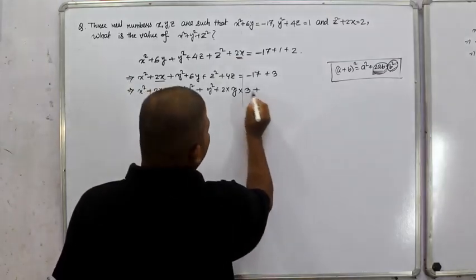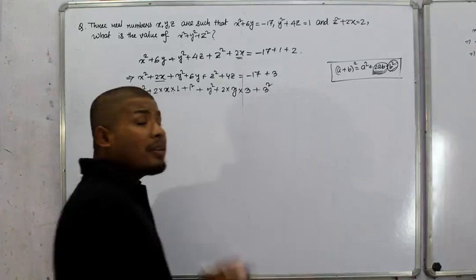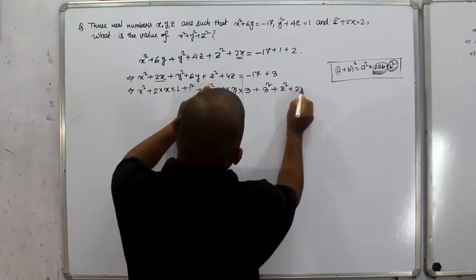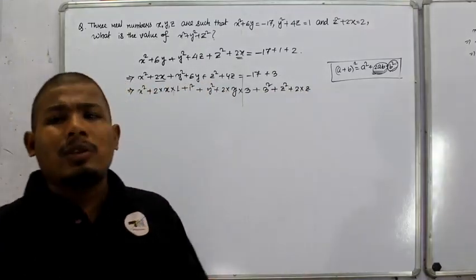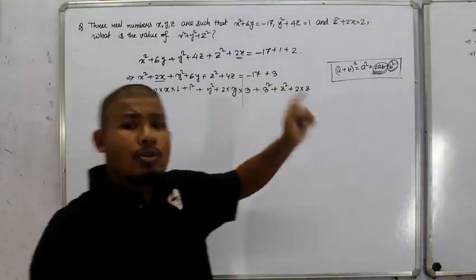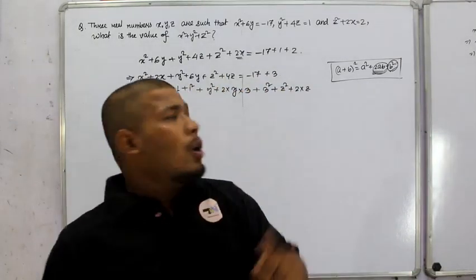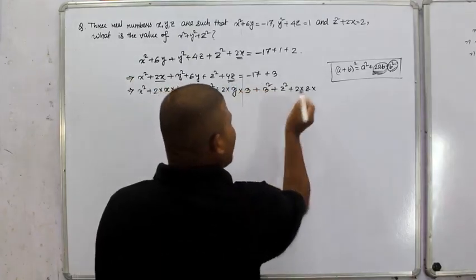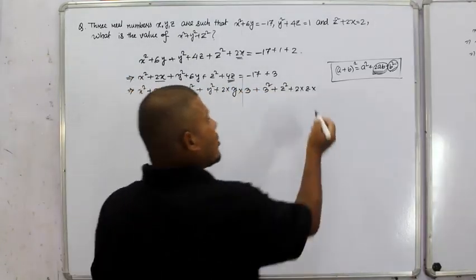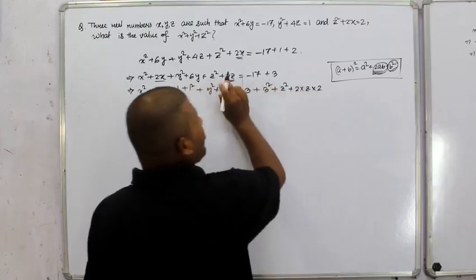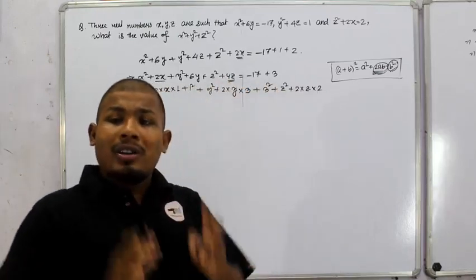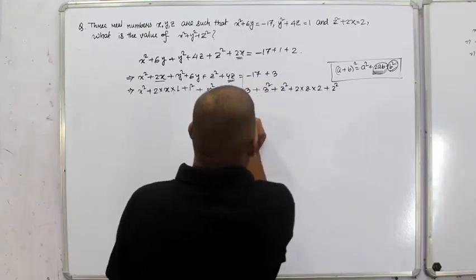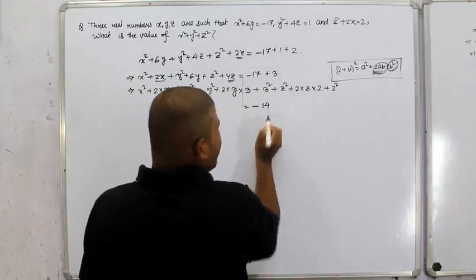For z squared plus 4z, since 4z equals 2 times z times 2, we get z plus 2 whole square. This includes 2 squared, which equals 4. Finally, the quantity equals minus 14.